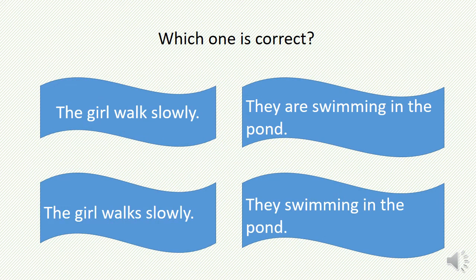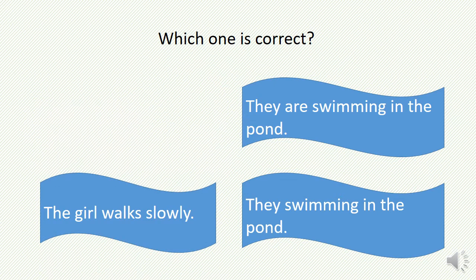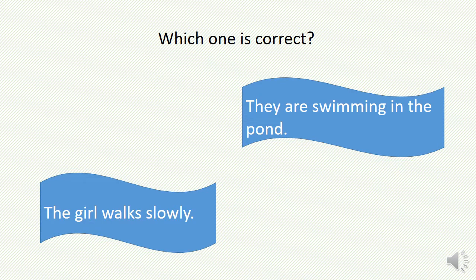Let's start our class. Dear students, look at the screen — there are four sentences on the screen, but they are not all correct sentences. Now tell me which sentences are not correct. The first sentence is 'the girl walks slowly' (repeated incorrectly), the second is 'the girl walks slowly,' the third is 'they are swimming in the pond,' and the fourth is 'they swimming in the pond.' The first and the last sentences are not correct because the verbs in these sentences are not in the correct form. So the second and third are the correct sentences in this slide.